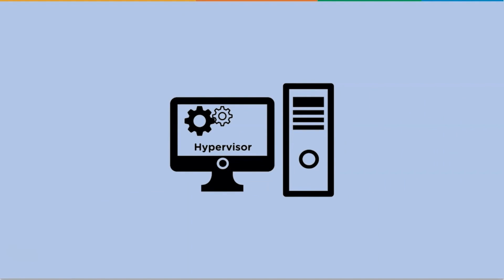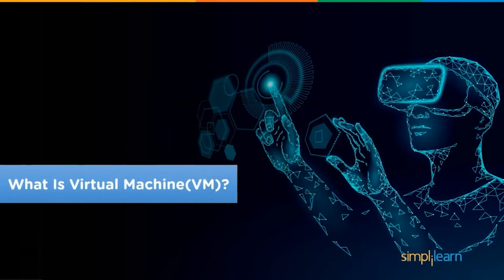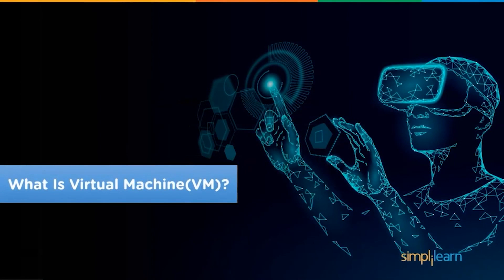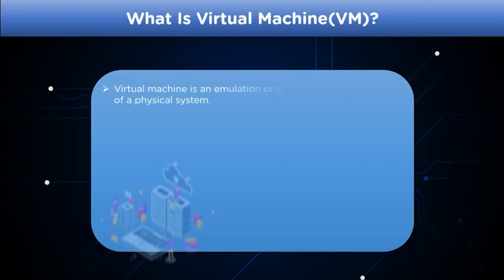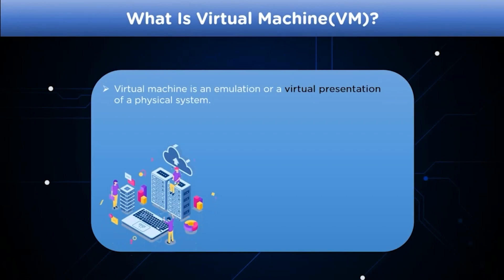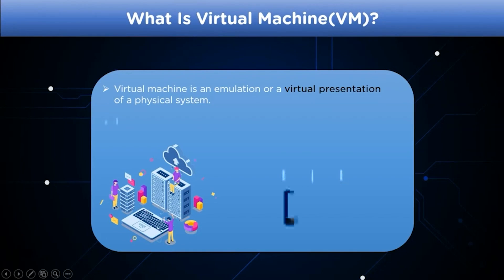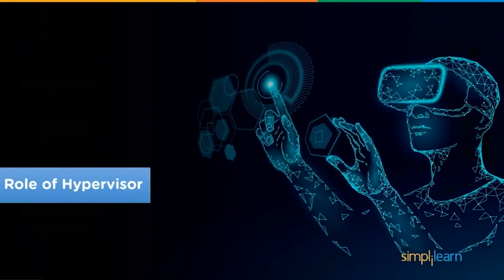Now that we've understood what virtualization is, let's look at what a virtual machine is. As the name suggests, a virtual machine is an emulation or virtual representation of a physical operating system on a hardware device. Virtual machines are also known as guest OS, whereas the physical system they run on is known as the host OS.